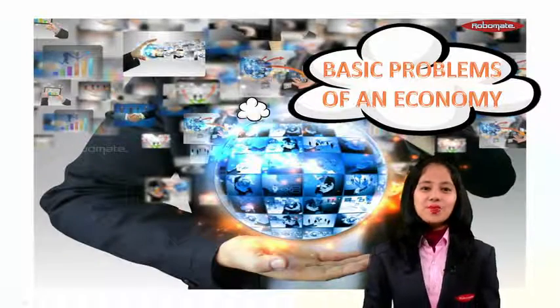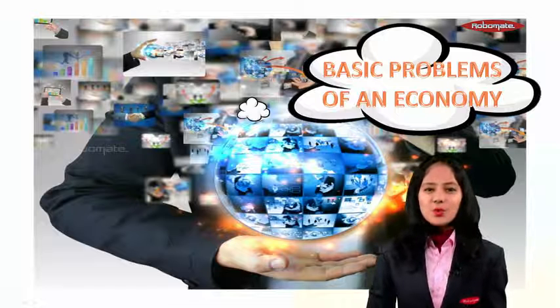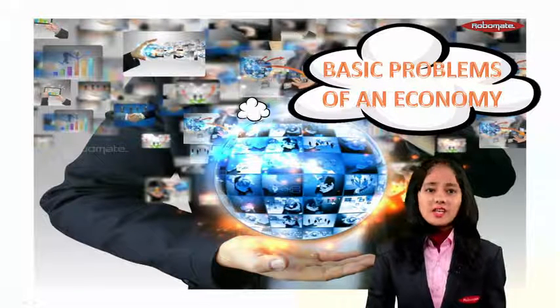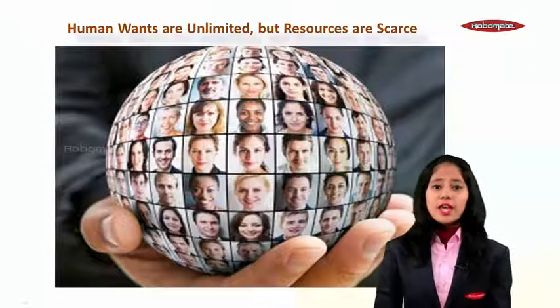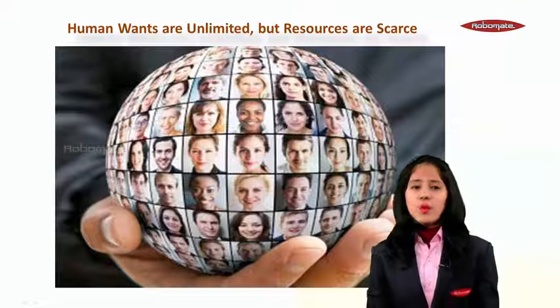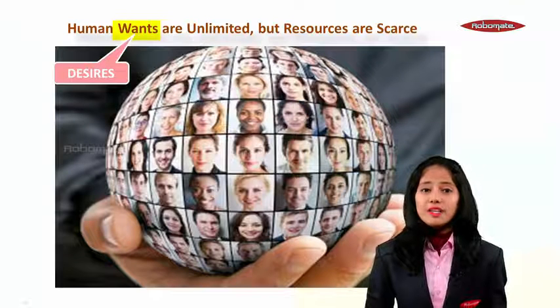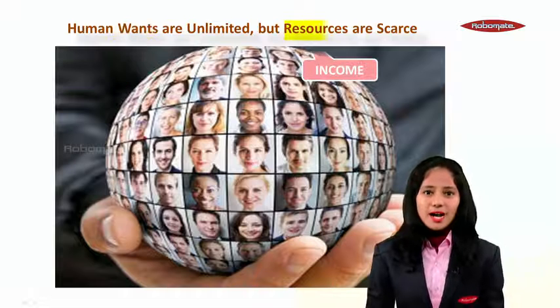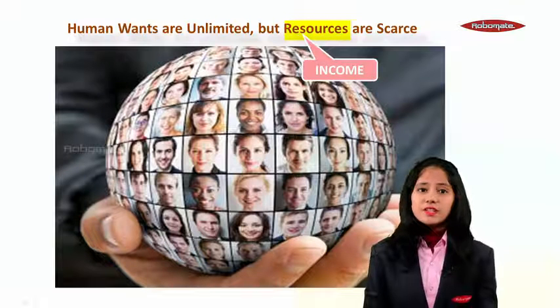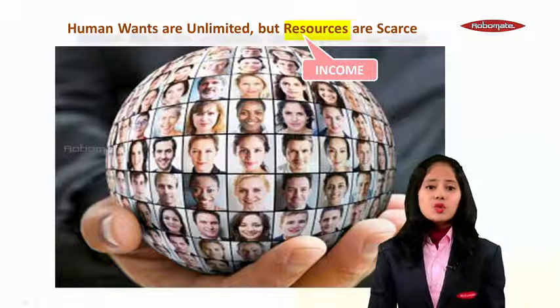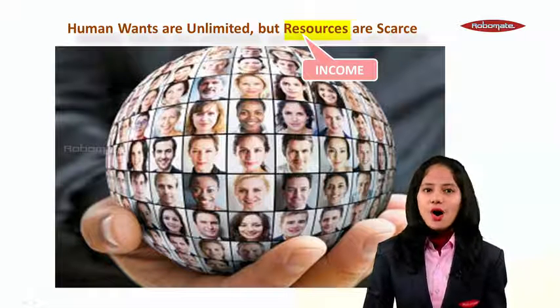Hello dear students, today we start with the new and dynamic chapter called basic problems of an economy. In the last few chapters we have already seen that human wants are unlimited. By wants we mean desires — human desires are unlimited, but resources to deal with them are scarce. The word resource indicates income or money.